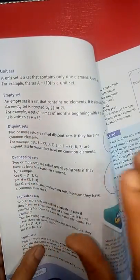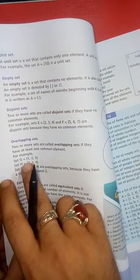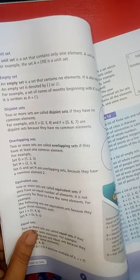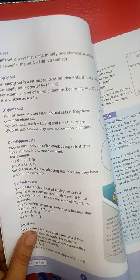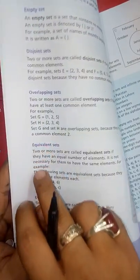That means nothing in common. Now overlapping sets. In sets G and H, G has {1, 2, 5} and H has {2, 3, 4}. You can see 2 is common. So when we see a common element between two sets, that means the two sets are in a position of overlapping. We call it overlapping set.